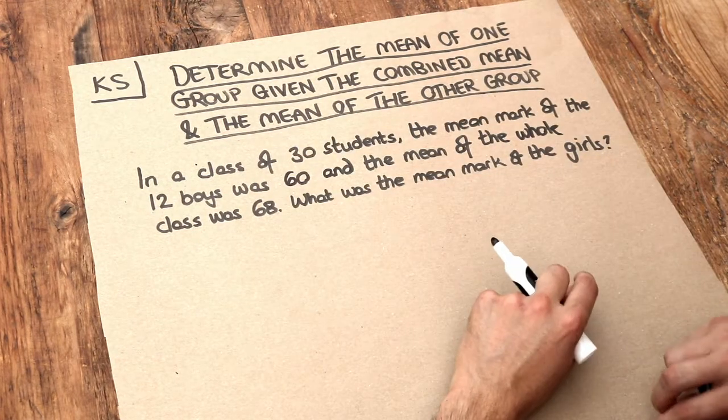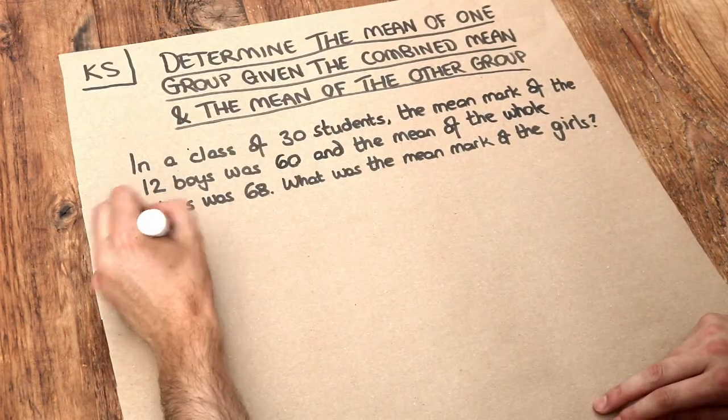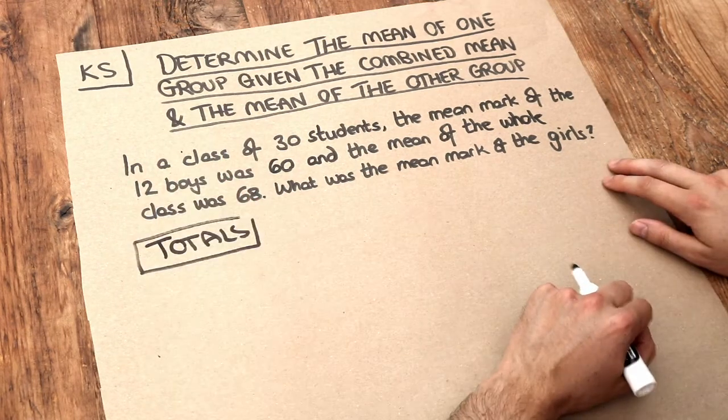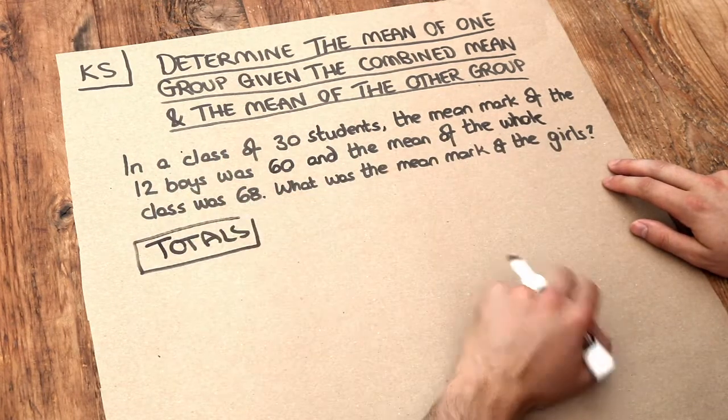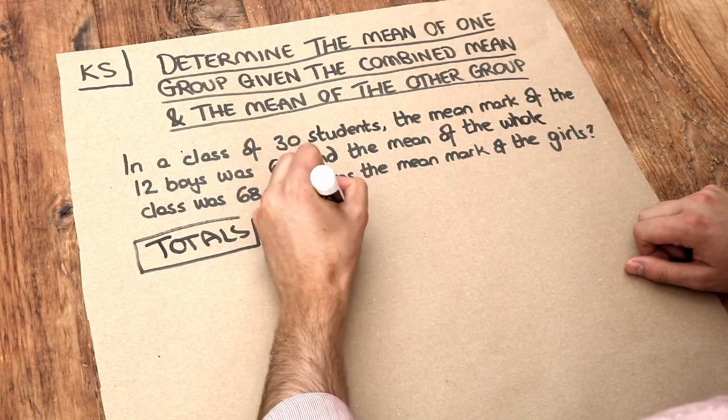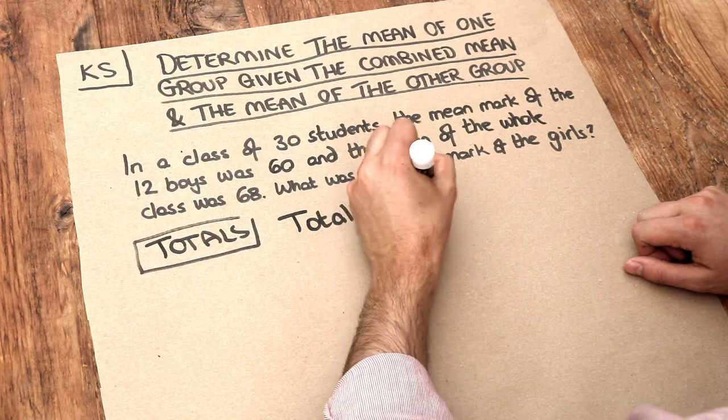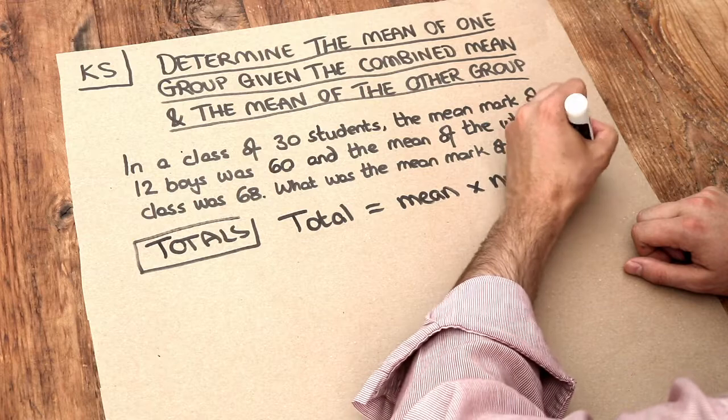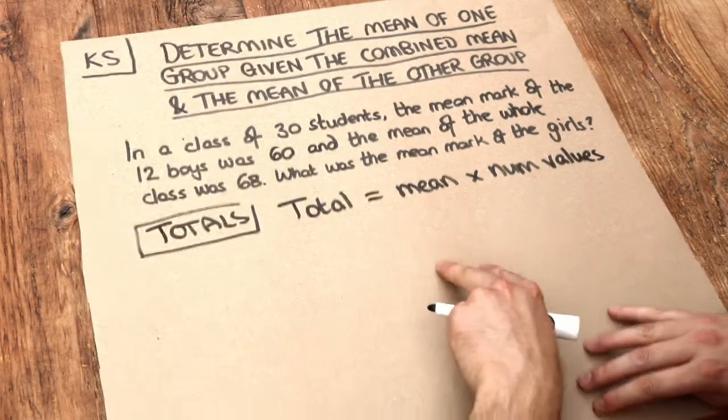In any problem solving with mean like this, the key is to reflect on totals. Let's first work out the total mark of the boys. Remember, the formula for the total of a group is the mean of the group times the number of values. That's just a rearrangement of the formula for mean, and that's what we're going to use here.